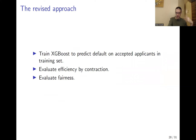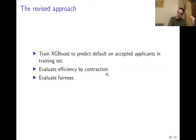The revised approach is: train the XGBoost model to predict default on the accepted applicants in the training dataset; then on the test dataset, evaluate the efficiency of the resulting credit adjudication strategy using contraction; and then evaluate the fairness of this credit adjudication strategy. Now let's discuss the results.